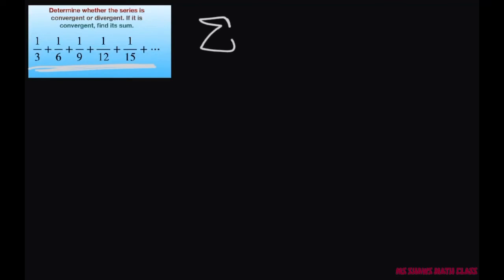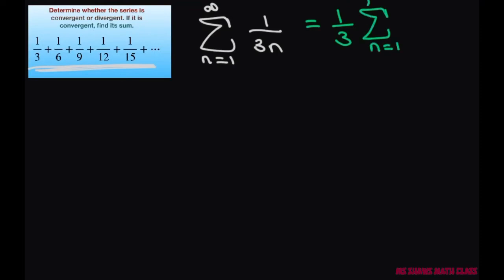I'm going to condense this with summation notation and write this as the sum from n equals 1 to infinity of 1 divided by 3n. The 1/3 can be pulled out and written as the sum from n equals 1 to infinity of 1 divided by n. So basically, this series is just a constant multiple of the harmonic series.